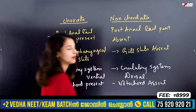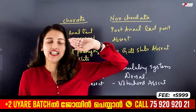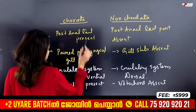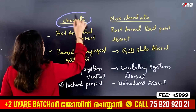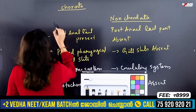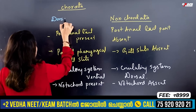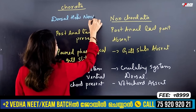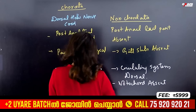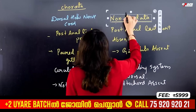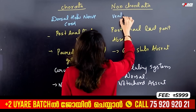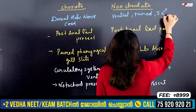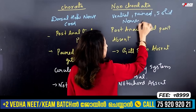In chordates, we have a dorsal hollow nerve cord — it is single, not paired. In non-chordates, the nerve cord is ventral, paired, and solid. These are the important differences between chordates and non-chordates.